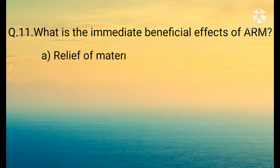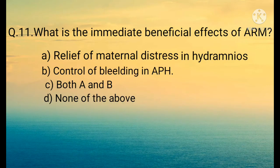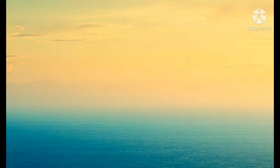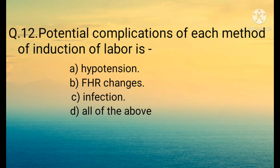Question number eleven: What is the immediate beneficial effect of ARM (artificial rupture of membrane)? Option A: Relief of maternal distress in hydramnios, Option B: Control of bleeding in APH (antepartum hemorrhage), Option C: Both A and B, Option D: None of the above. The correct option is Option C: Both A and B.